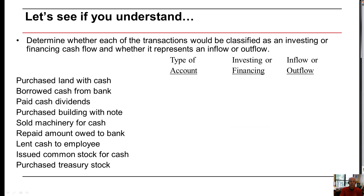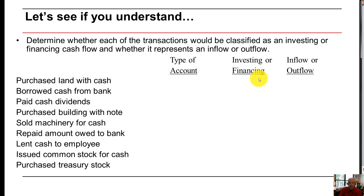Let's determine which of the following transactions would be classified as investing or financing cash flow, and whether it represents an inflow or outflow of cash. Purchased land with cash — land is a long-term asset, so it gets reported in the investing section. The word 'purchased' tells us we used cash, so it would be an outflow of cash.